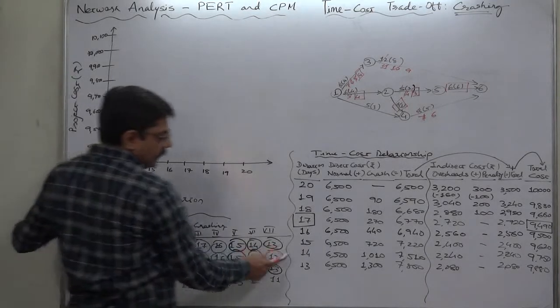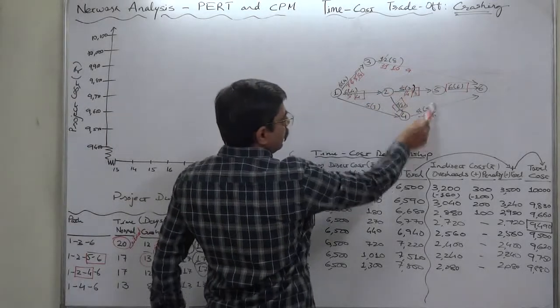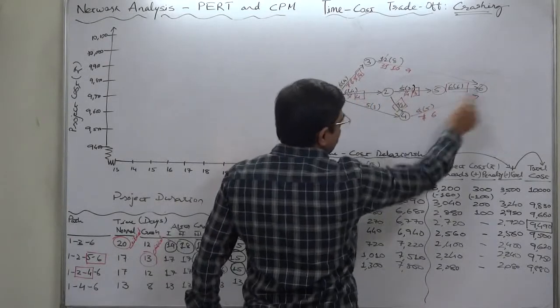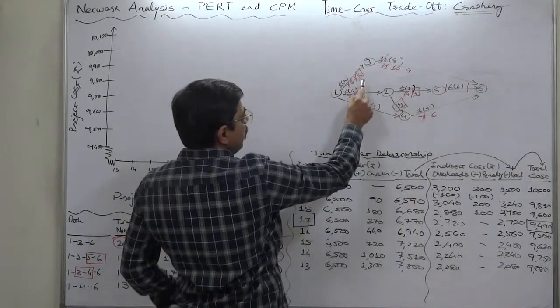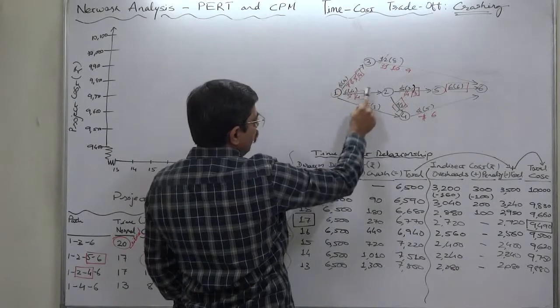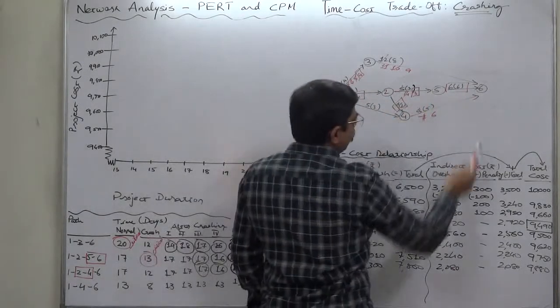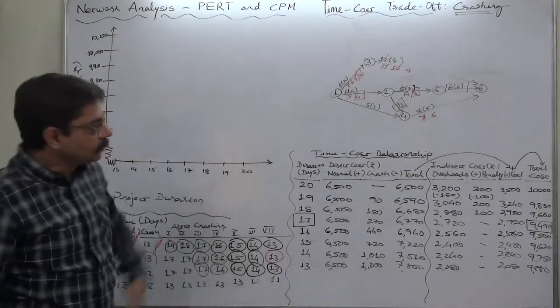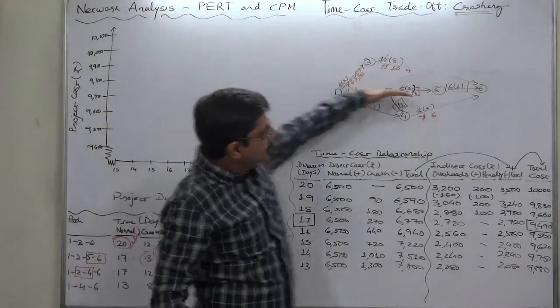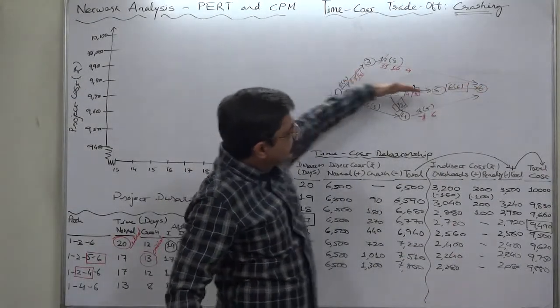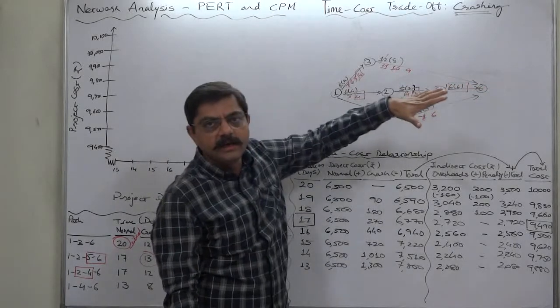These two can be further reduced by one day but this path cannot be reduced because we have reached the crash time of activity 1,2 as well as 2,5 and 5,6 all the three. So this path cannot be crashed further or rather any activity on this path cannot be crashed further.